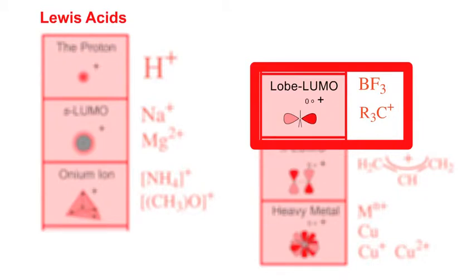Lobe Lumo Lewis acids. These are the typical electron pair acceptor, vacant orbital Lewis acids such as boron trifluoride and carbenium ions, otherwise known as carbocations.